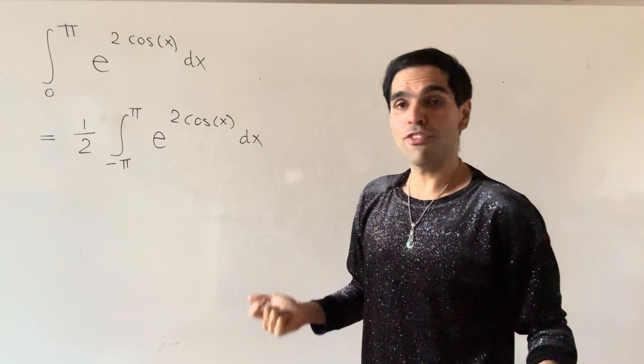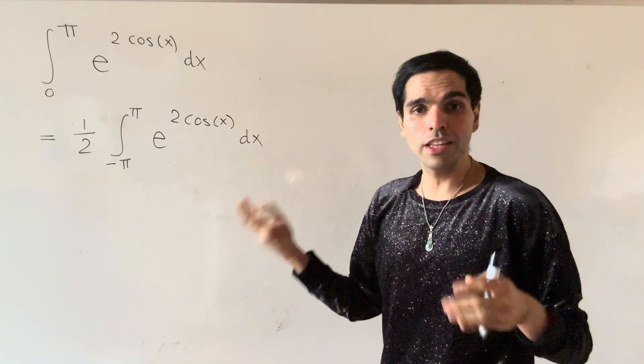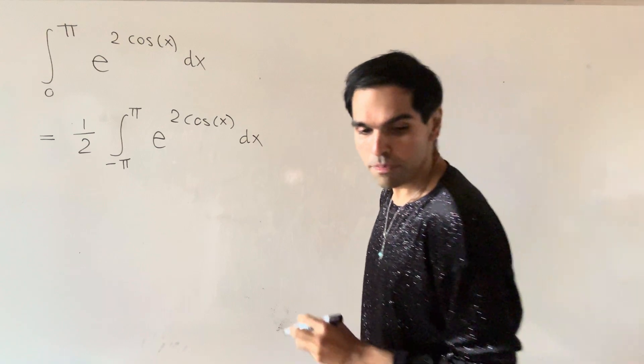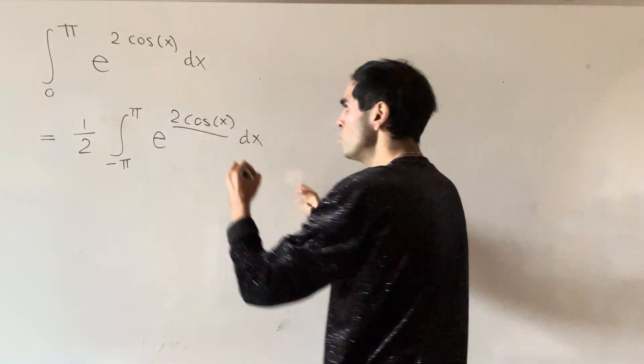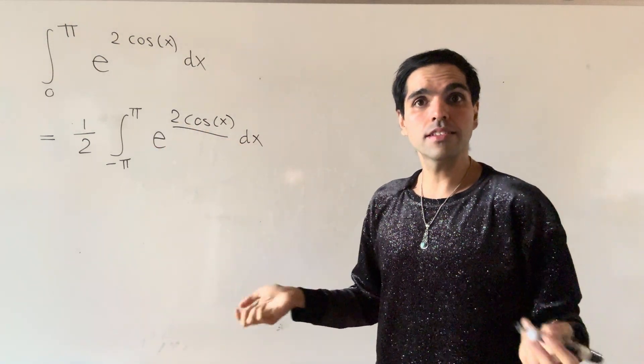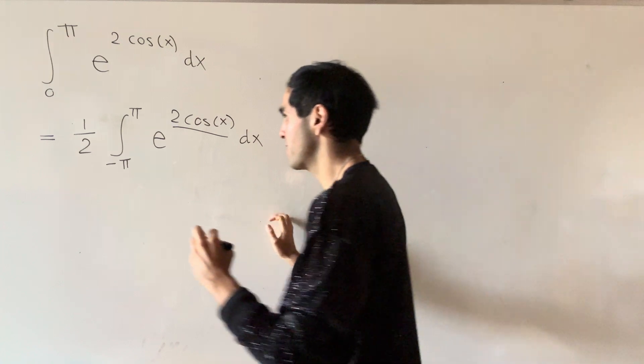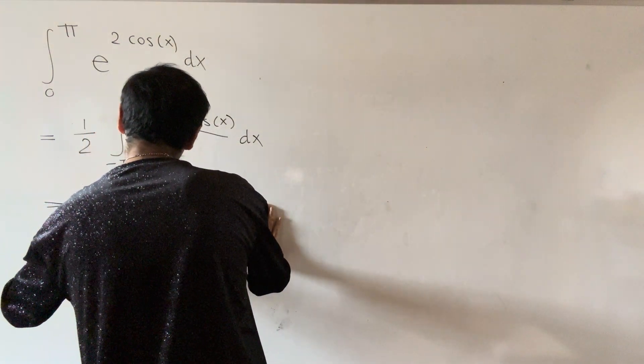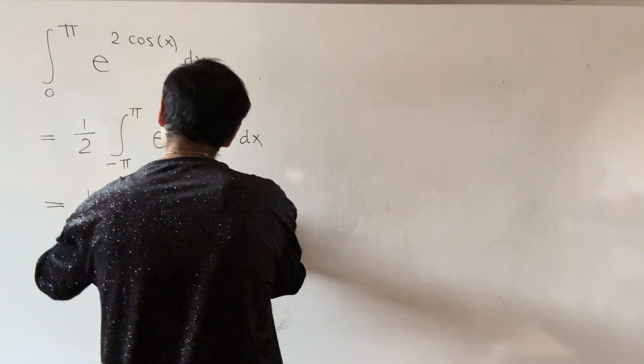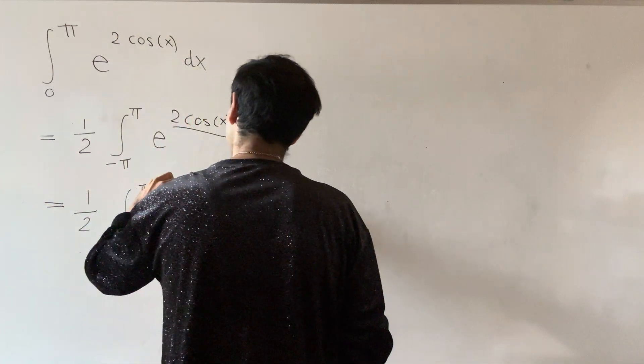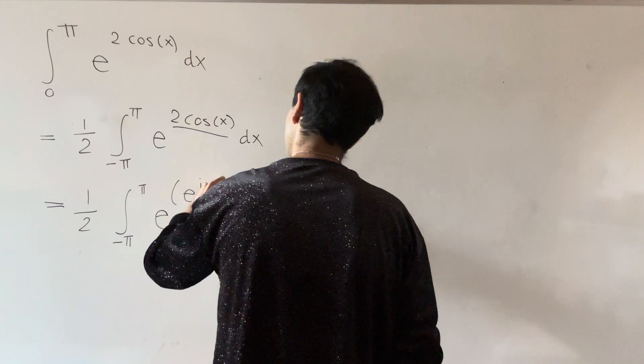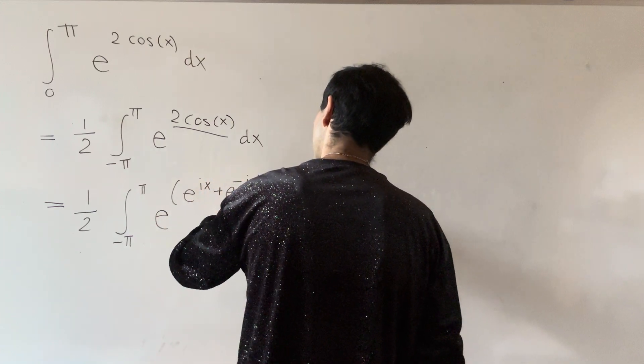And now what's beautiful is that this integral will lead us to the wonderful world of complex analysis. So two cosine of x is the same as sum of complex exponentials. So it's one half integral from minus pi to pi of e to the ei x plus e minus ix dx.